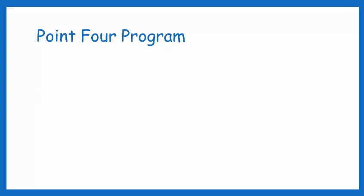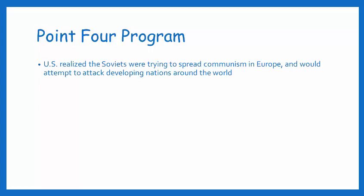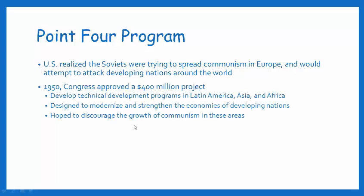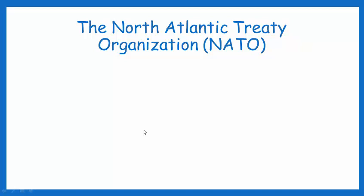To continue our Cold War efforts, something known as the Point Four Program was developed. The United States realized the Soviet Union was going to try to spread communism not only in Western Europe but around other parts of the world. In 1950, Congress approved a $400 million project to give aid to countries in Latin America, Asia, and Africa — keeping those countries with us instead of going to communism, and discouraging the growth of communism in those areas. The Point Four Program was essentially another program backing up our policy of containment.